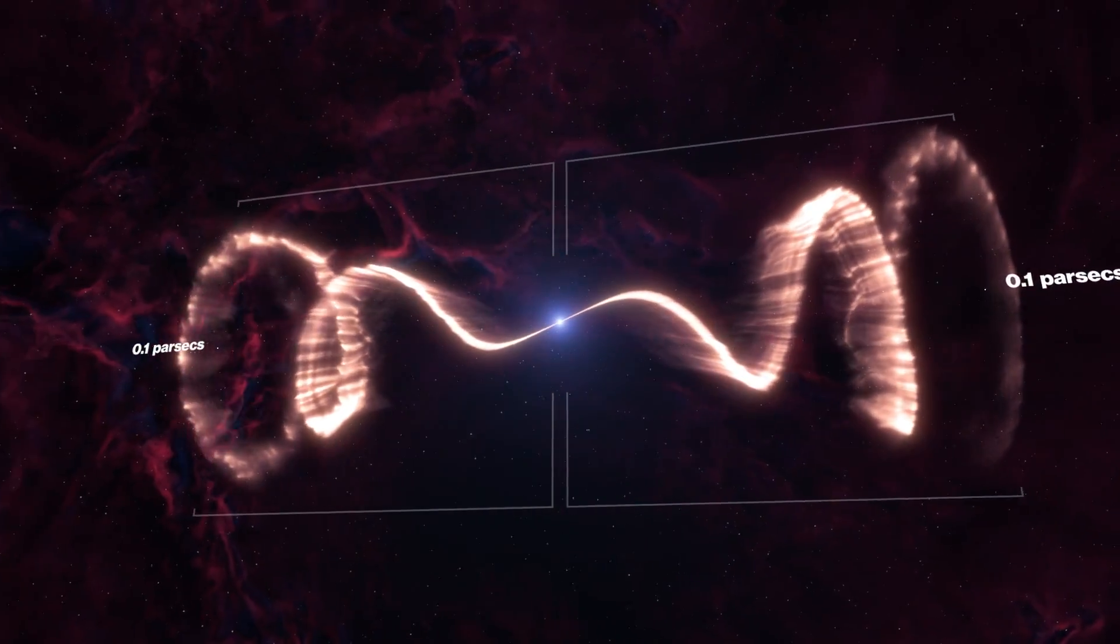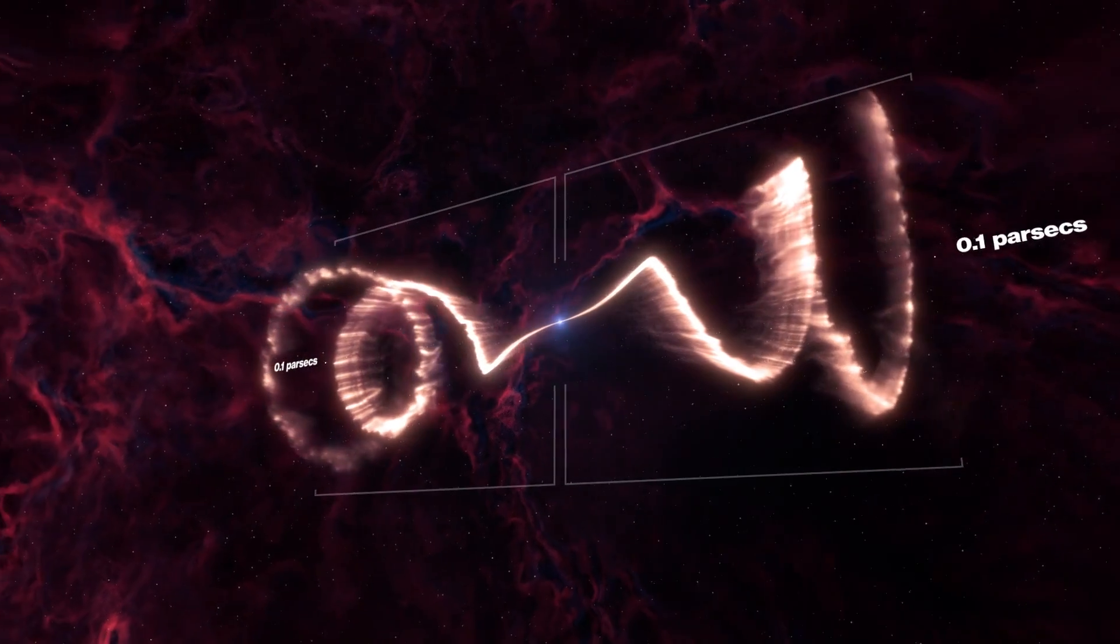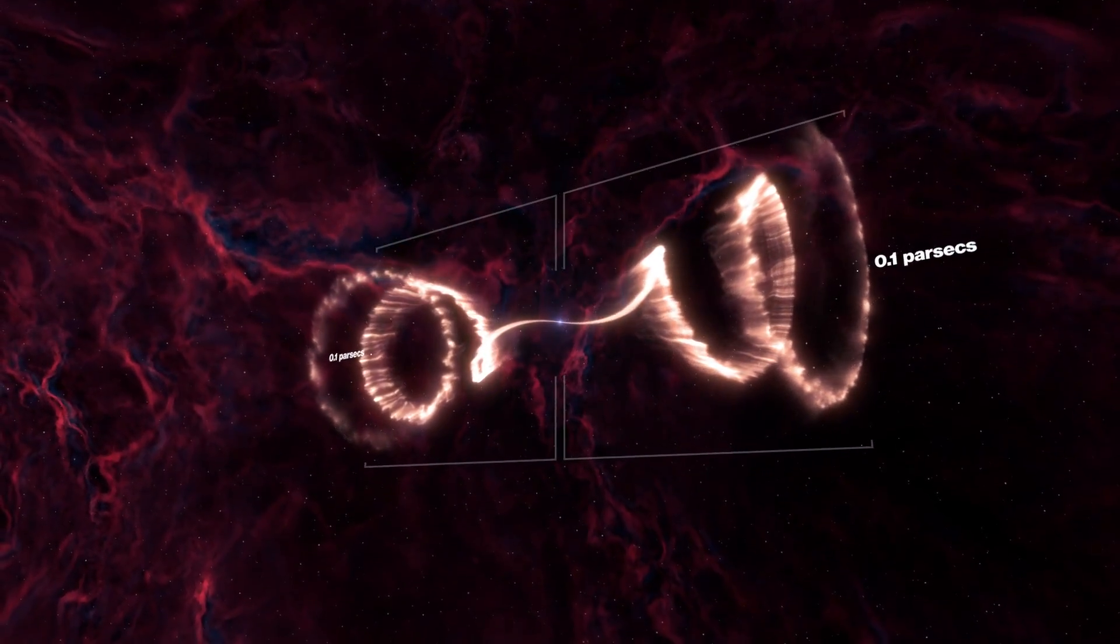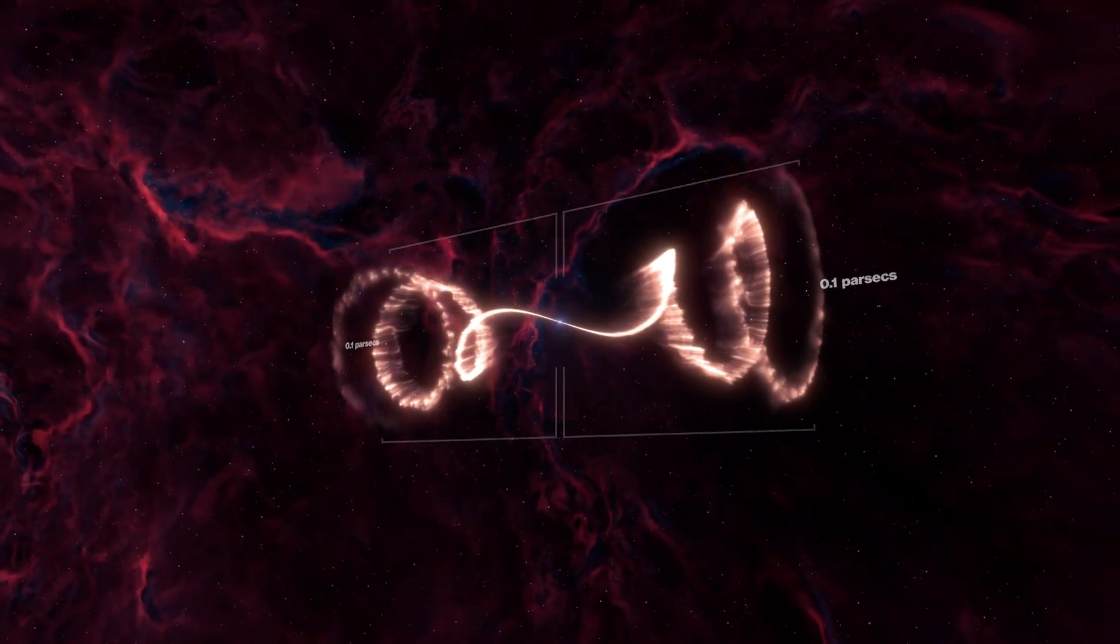As matter accretes onto the black hole, precessing jets containing this material burst out into space.